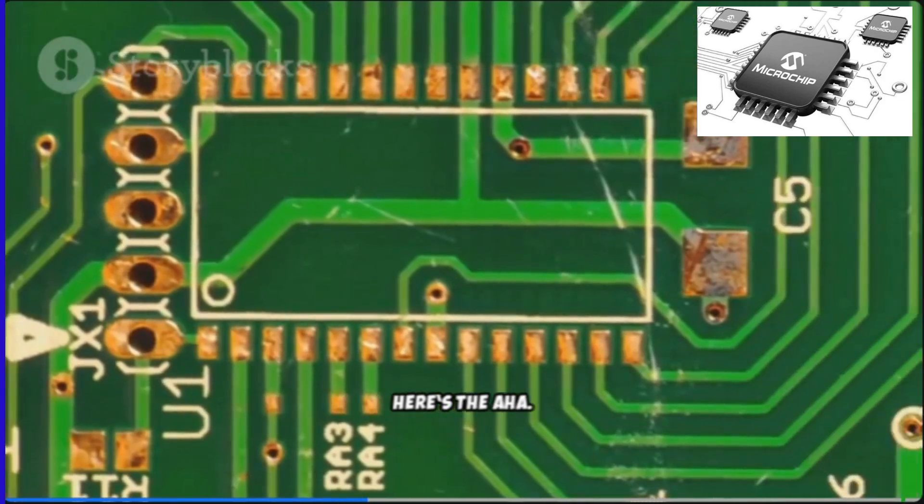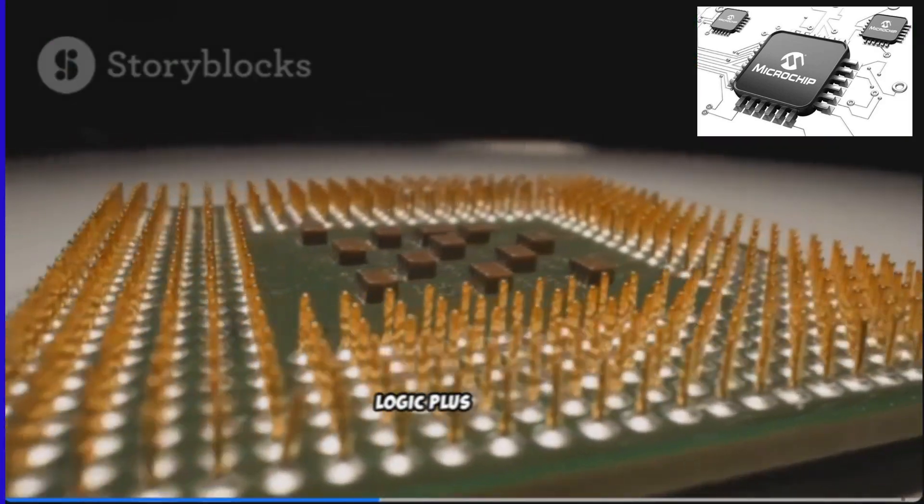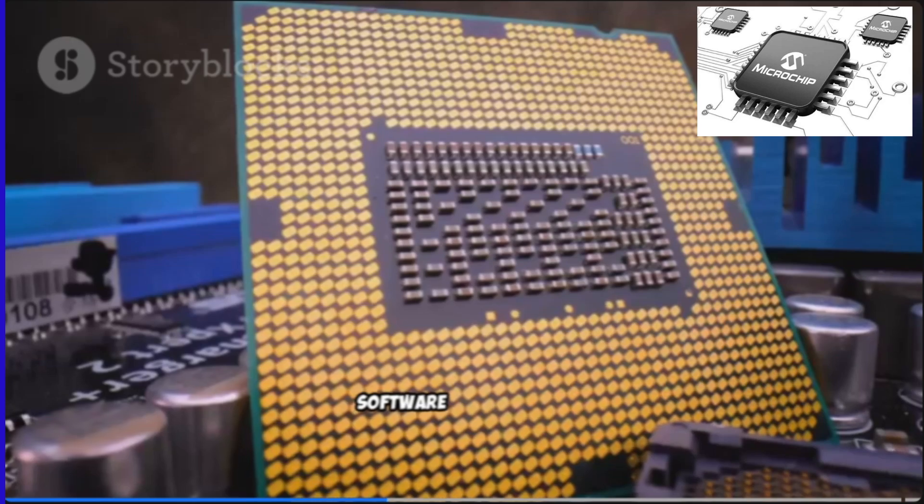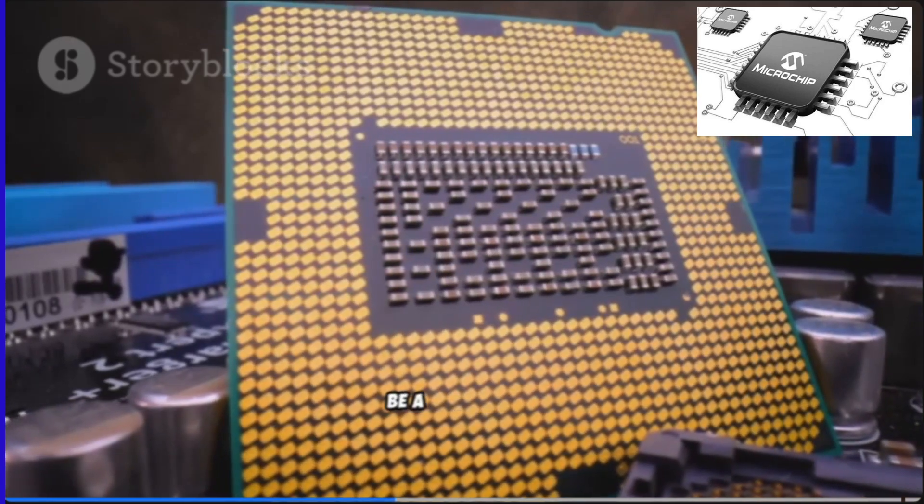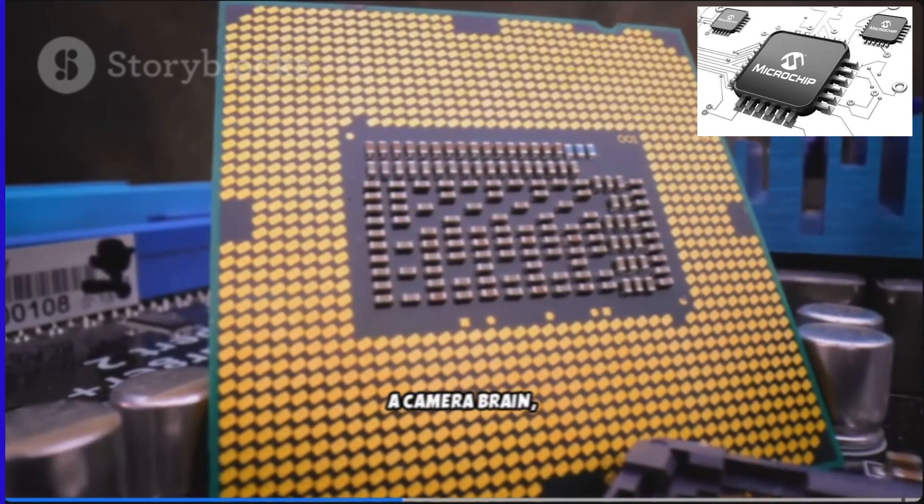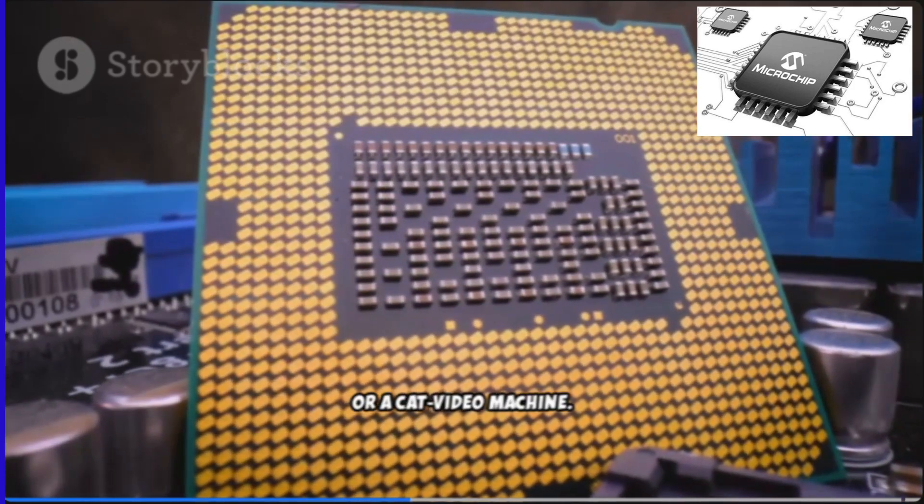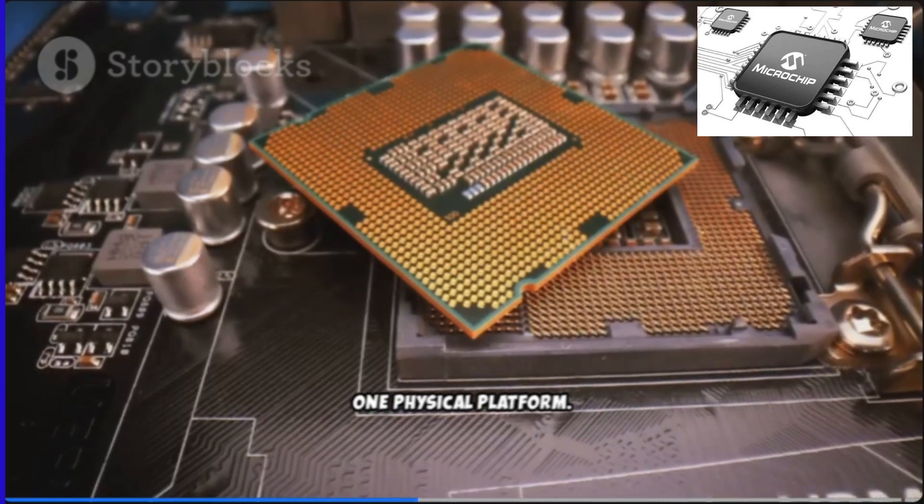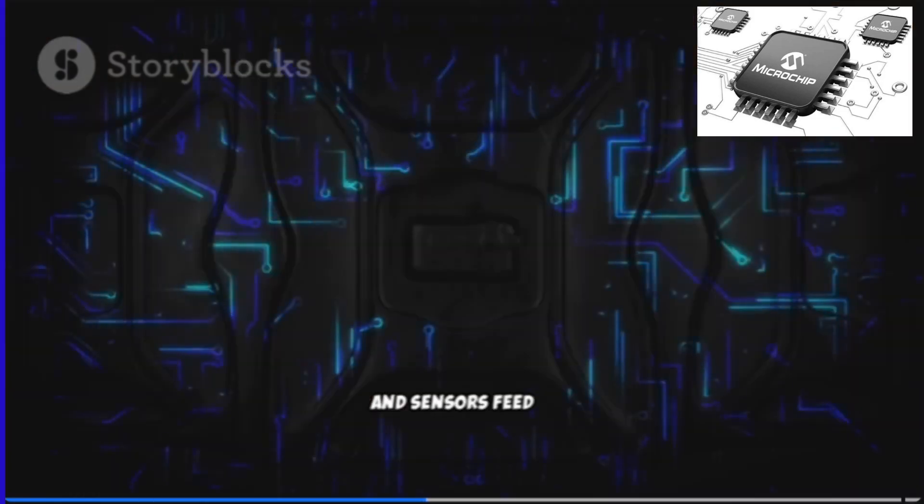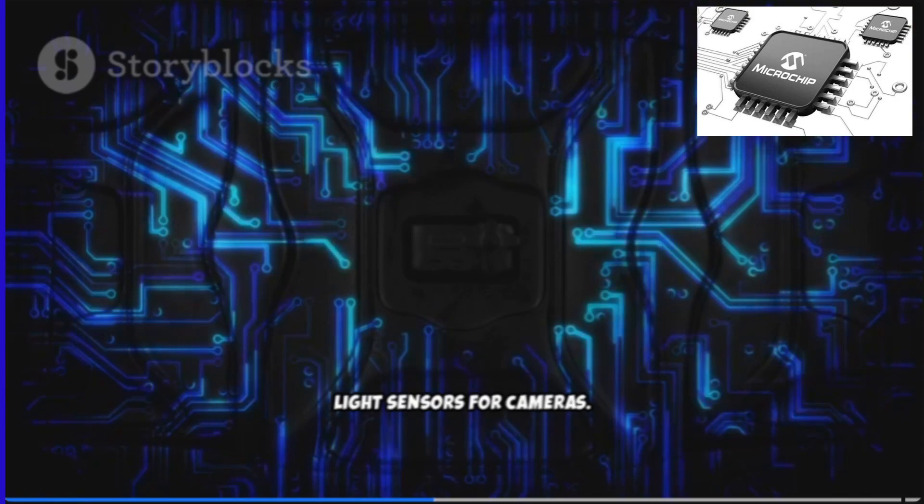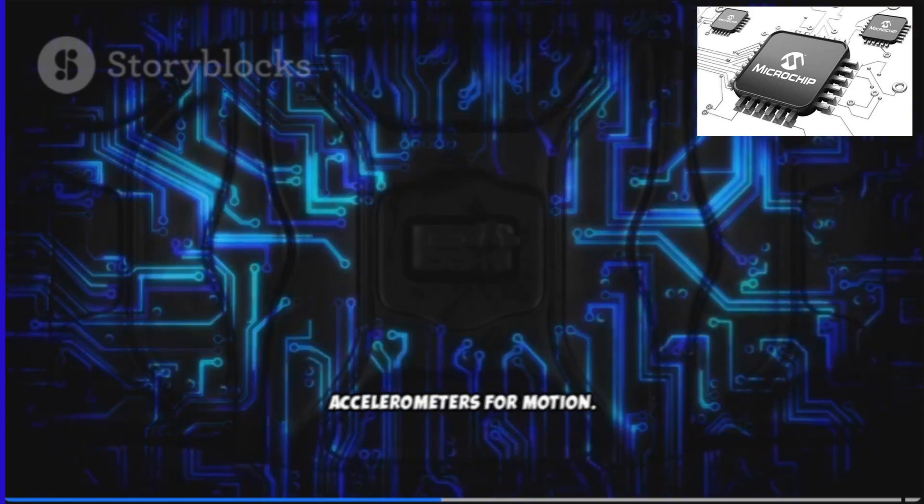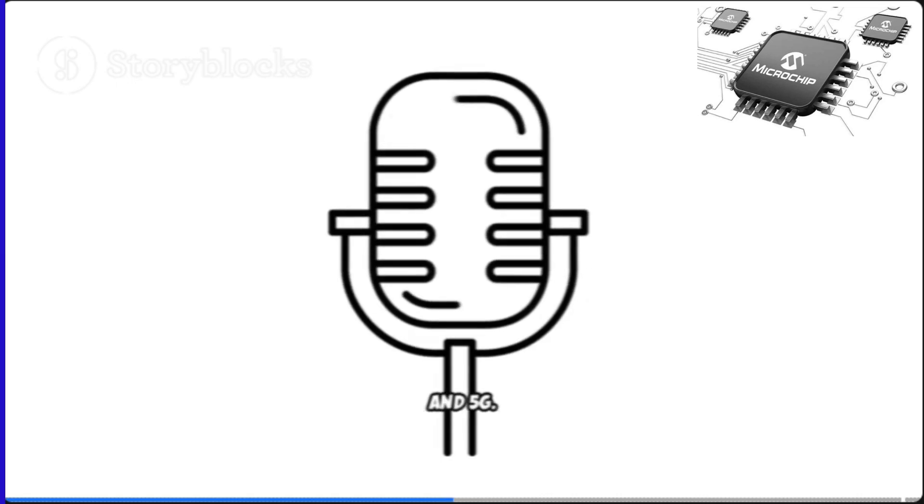Here's the aha. A microchip is a general tool for logic. Logic plus memory equals software. Software reprograms the same silicon to be a calculator, a camera brain, a car controller, or a cat video machine. One physical platform, infinite behaviors. Sensors feed it the world: light sensors for cameras, accelerometers for motion, microphones for sound, radios for Wi-Fi and 5G.